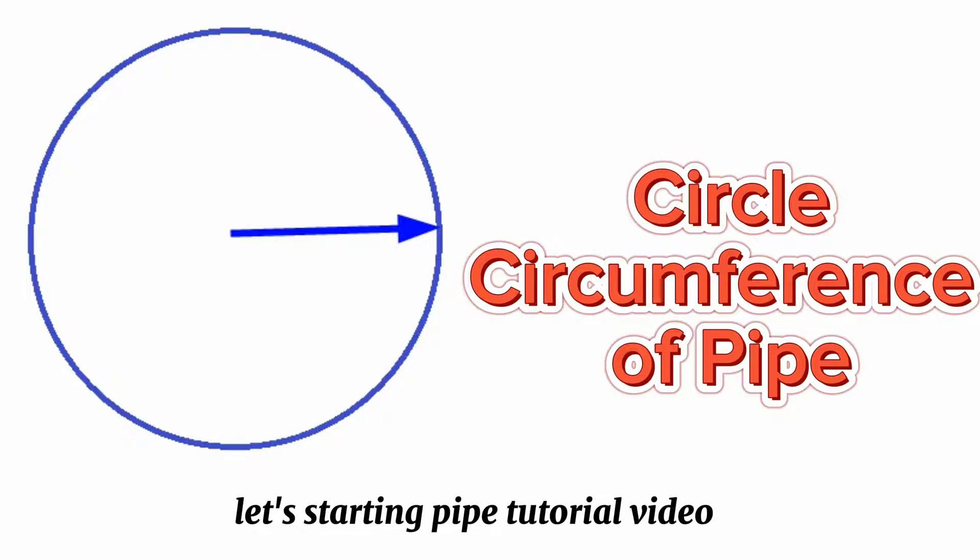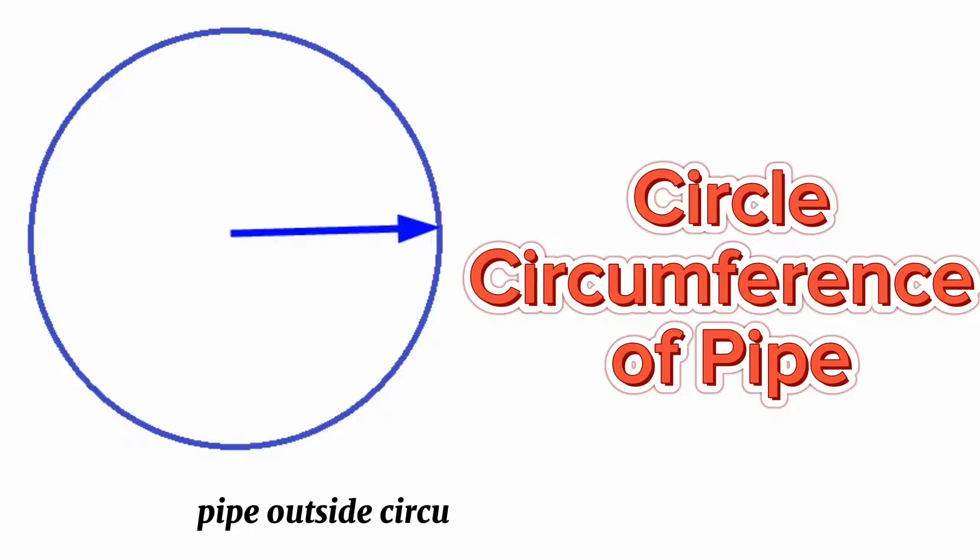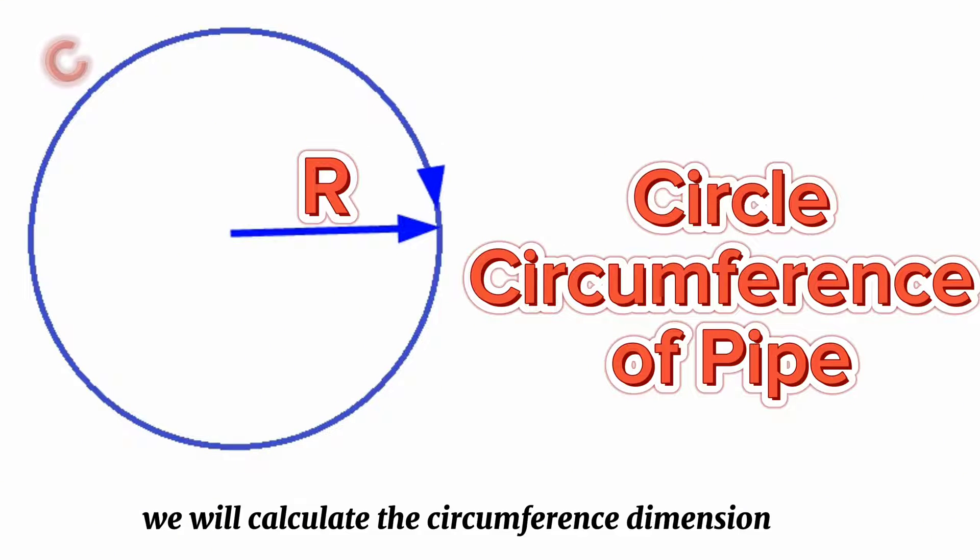Let's start the pipe tutorial video. We will explain how to calculate the length of the pipe outside circumference in pipelines. As you see, this is a circle, a top view of pipe. R is the outside radius of pipe. We will calculate the circumference dimension.